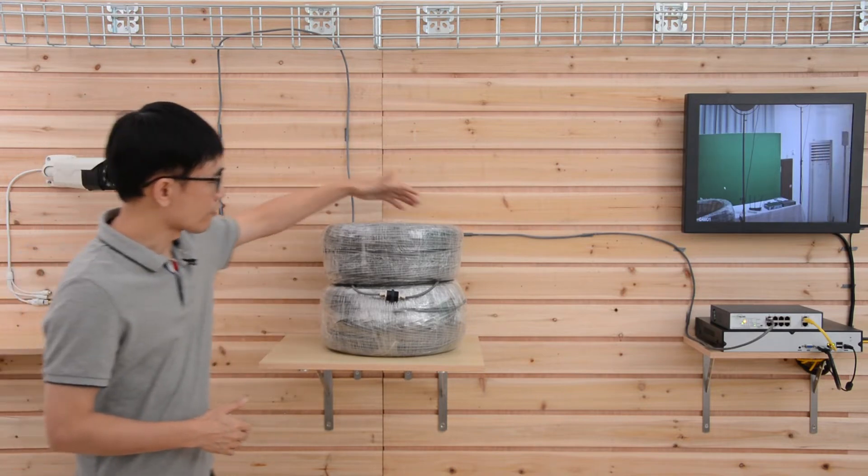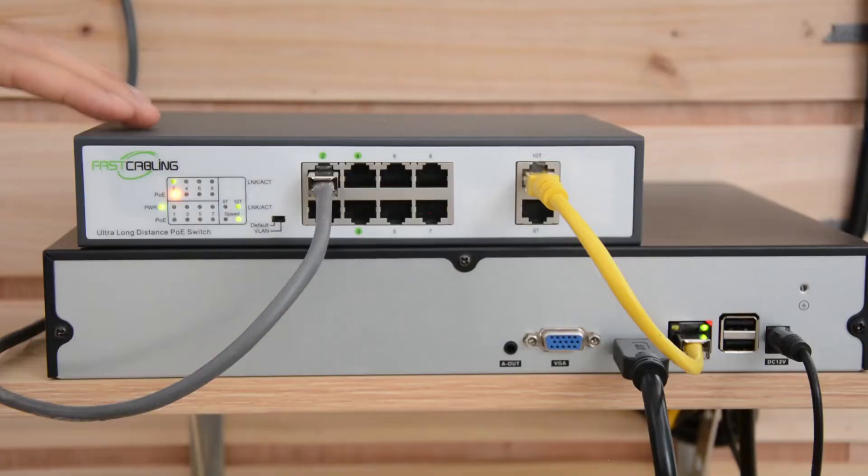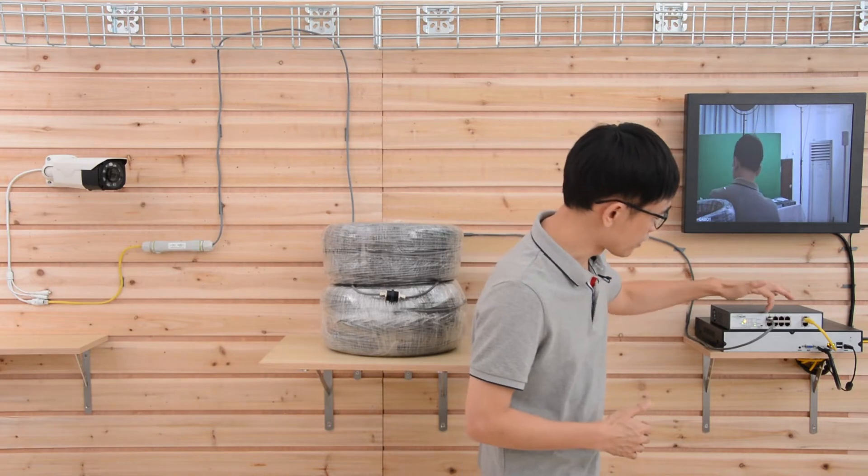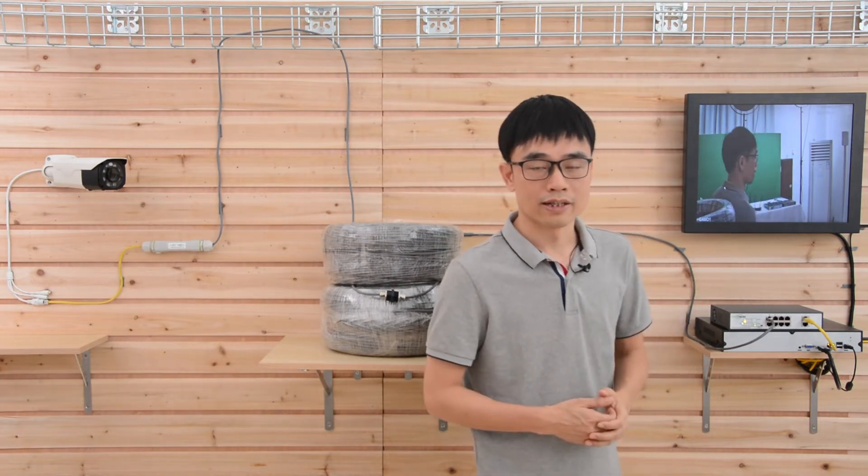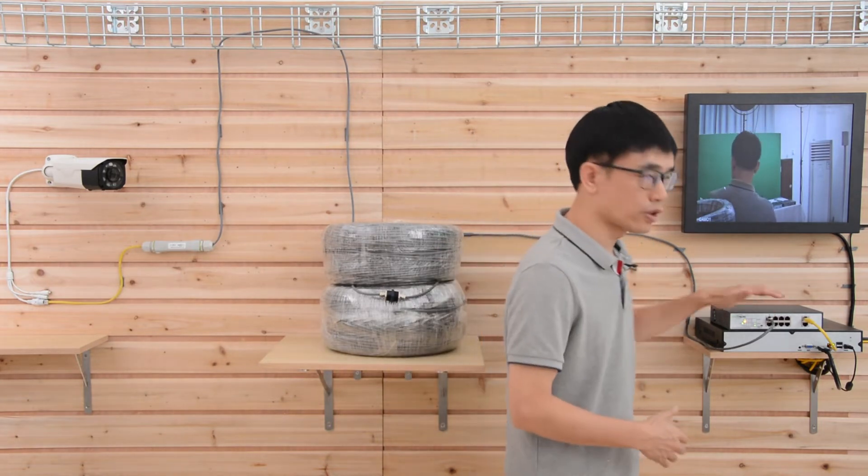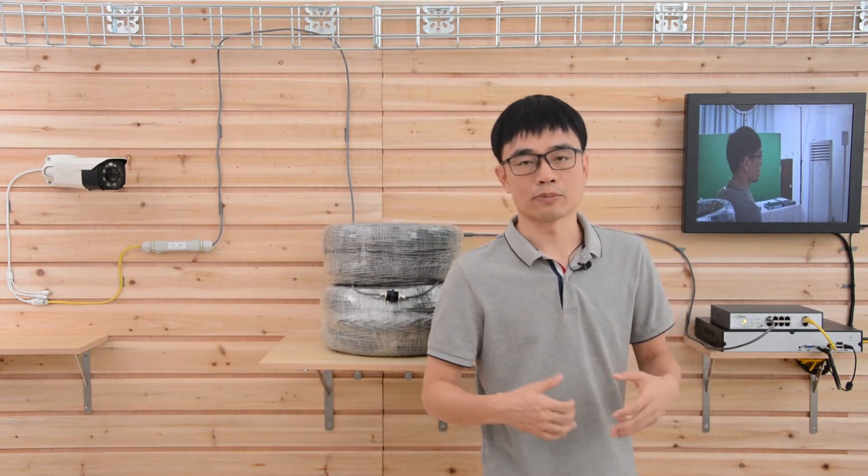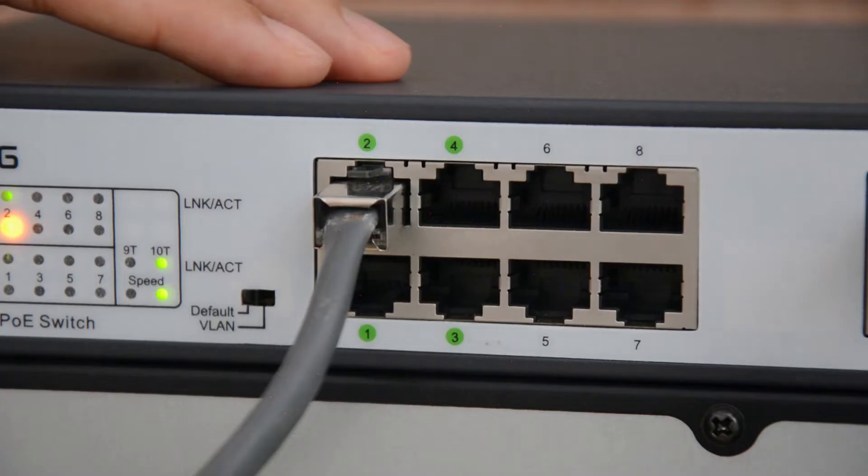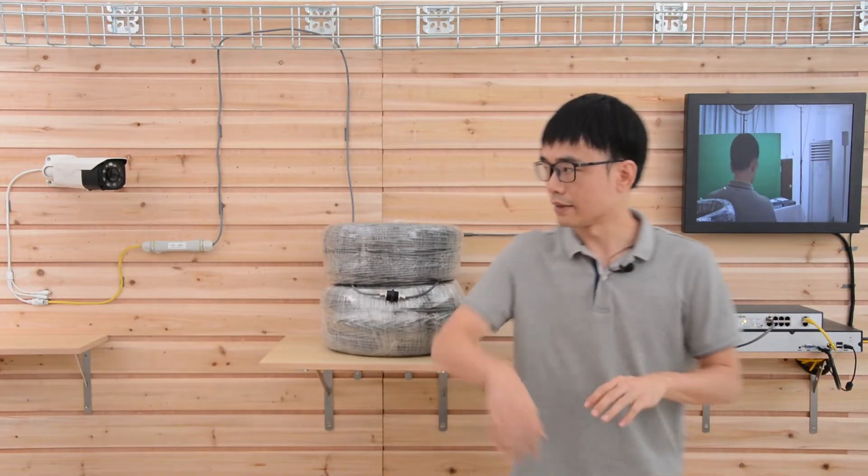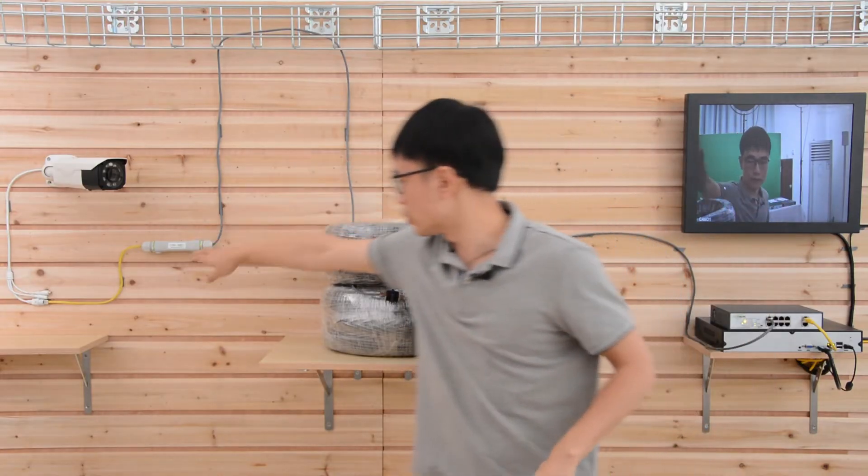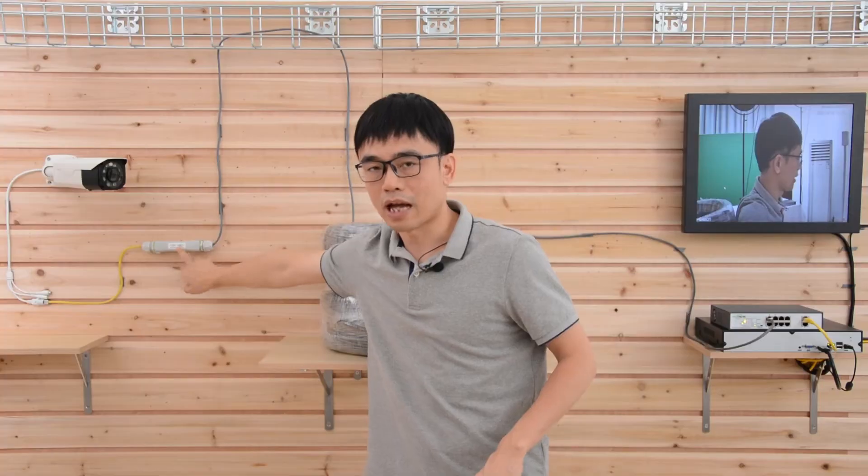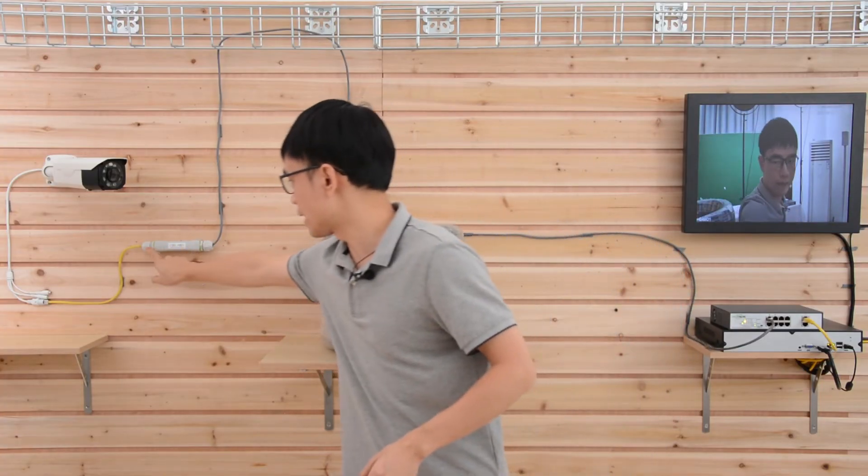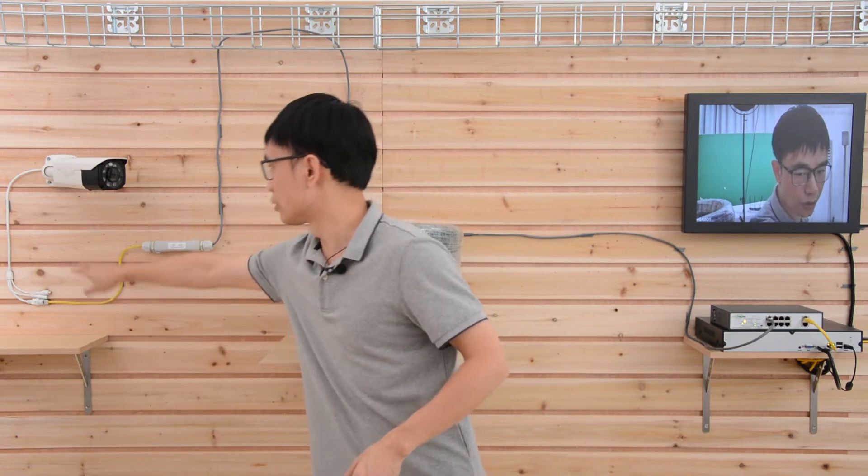And now one end of the cable is connecting to this long run PoE switch. It looks like a regular switch. Only the first four ports support long run. The maximum distance between this switch to the edge device can reach up to 2500 feet. And now I'm using port number two and connecting to the cable. And at the other end, you can see we do need one PoE extender sitting here. I will explain why we need this PoE extender. And after the PoE extender, we will use a short patch cord to connect to the camera.